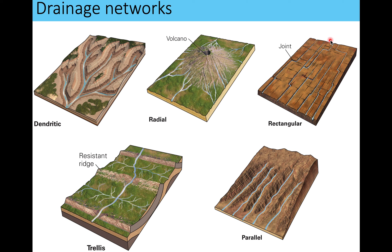Trellis drainage looks like a garden trellis and occurs where you have different types of rock layers eroding in different ways. You can see a syncline and anticline in cross section. The harder gray layer is still there forming mountains, while the softer beige layer has mostly eroded away. Because of this folding, you end up with a pattern of horizontal rock layers sticking up from the surface — this is called a trellis drainage pattern.